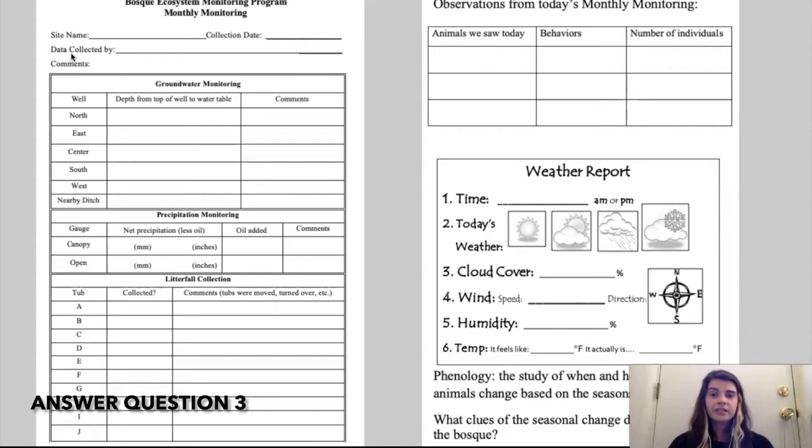Our three main data sets are groundwater monitoring, precipitation monitoring, and litterfall collections. I'm going to get through each of these three in more detail in just a moment.